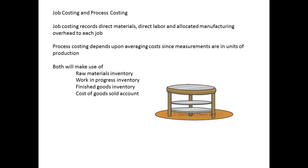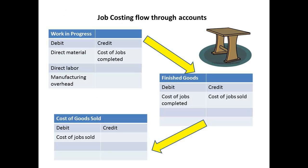The principles for job costing and process costing still require that we consider a raw materials inventory, a work-in-progress inventory, a finished goods inventory and a cost-of-goods sold account. The flow of costs through job costing involves taking costs of materials, labour and overheads as debits to work-in-progress, and to transfer completed jobs out we then credit work-in-progress with the cost of the completed job and debit finished goods with the same amount.